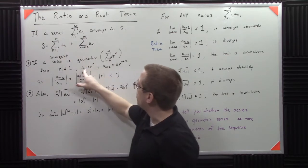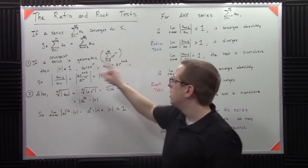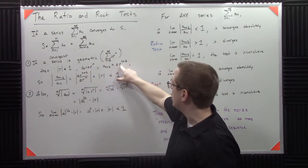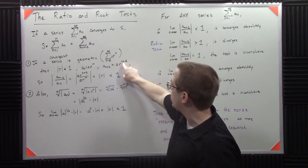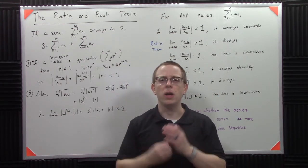The sequence term here is some A, which is a fixed value, times R to the N. So this sequence term is this, and then this next term in the sequence is that value with R to the N plus 1. Those are the first two terms.